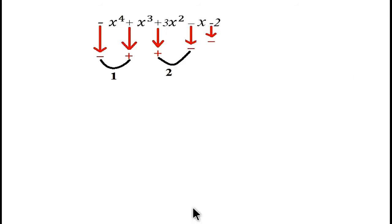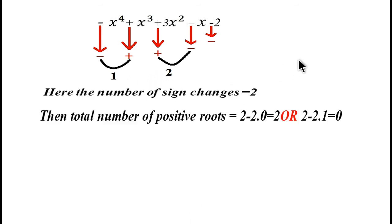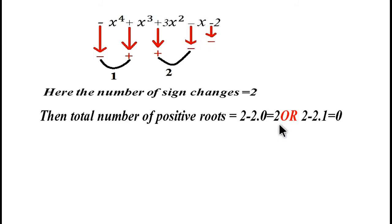Now we return to our given example. We have two sign changes. Therefore, the total number of positive roots is either 2 - 2×0 = 2, or 2 - 2×1 = 0. So the polynomial either has two positive zeros or no positive zeros at all.